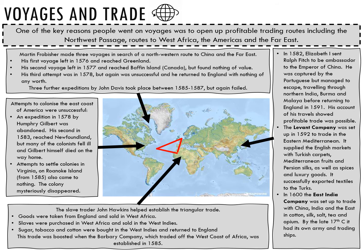In 1582, Elizabeth I sent Ralph Fitch as ambassador to the Emperor of China. He was captured by the Portuguese but managed to escape and travelled through northern India, Burma and Malaya before returning to England in 1591. His account of his travels showed that profitable trade in the East was possible. The Levant Company was set up in 1592 to trade with the Eastern Mediterranean, supplying the English market with Turkish carpets, Mediterranean fruits, Persian silks, as well as spices and luxury goods.